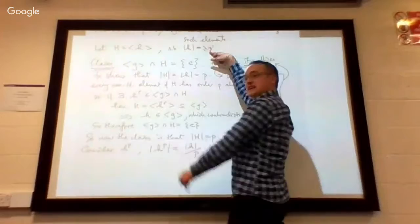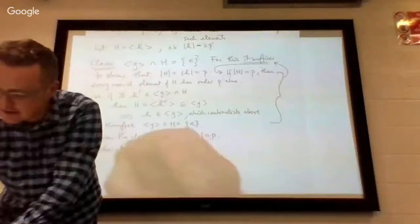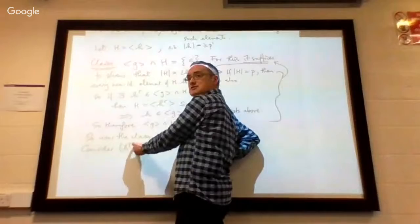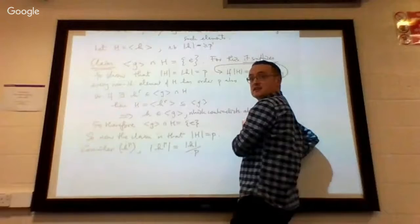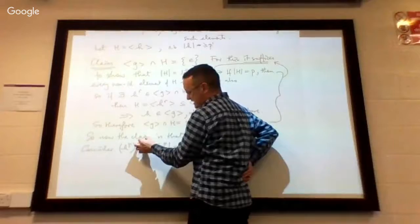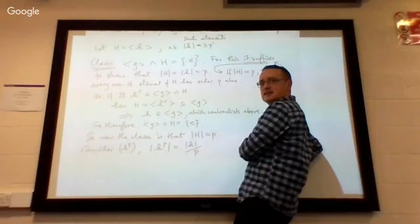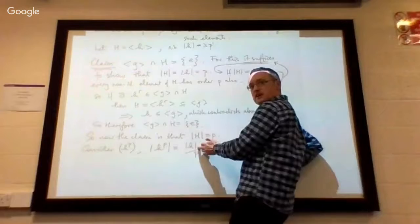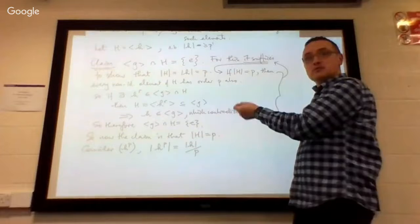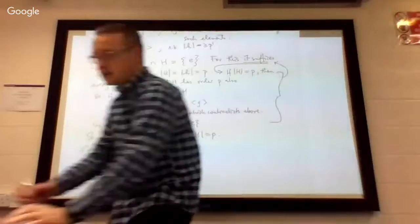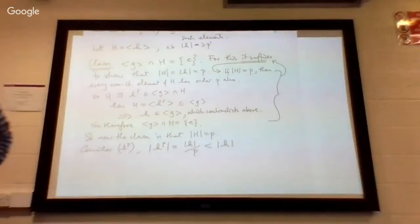Remember the definition of order — it's the exponent you have to raise an element to to make it equal to the identity. The order of h is some power of P. But if you think of the element h^P, what exponent do you have to raise h^P to in order to get the identity? You've already got a factor P there. So you only have to raise it to the order of h divided by P. Because when you raise it to that, you have h to the power of (order of h), which is the identity. And that's the smallest exponent. In particular, that is smaller than the order of h.